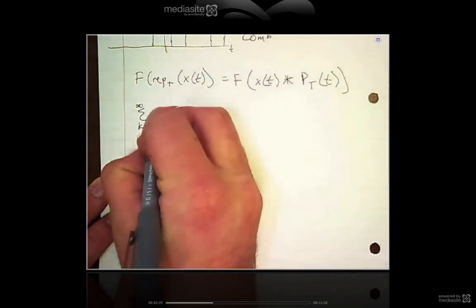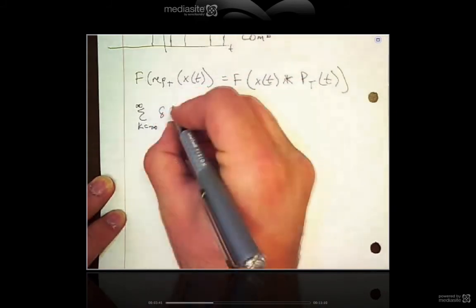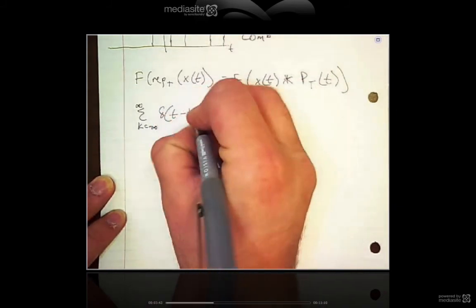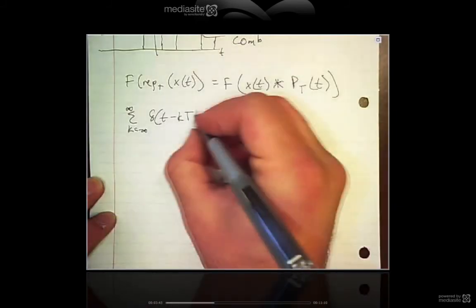Say you have some impulse train which looks like a delta function in the time domain, T minus K times big T.